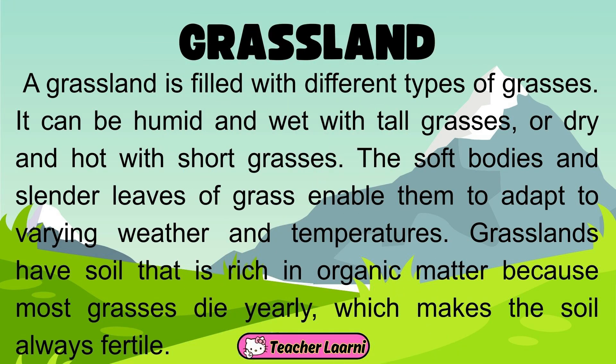A grassland is filled with different types of grasses. It can be humid and wet with tall grasses, or dry and hot with short grasses. The soft bodies and slender leaves of grass enable them to adapt to varying weather and temperatures. Grasslands have soil that is rich in organic matter because most grasses die yearly, which makes the soil always fertile.